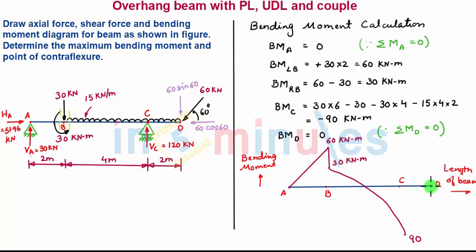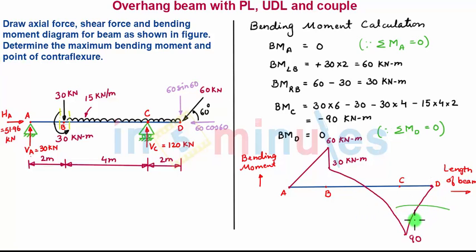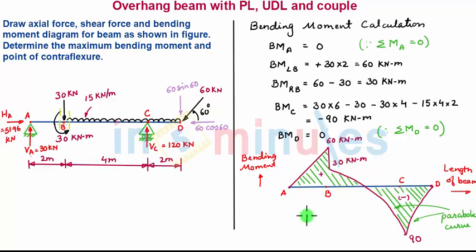Bending moment at D is again 0. Between C and D there is also a uniformly distributed load, so the bending moment will be varying parabolically — this is a parabolic curve. This part of the beam is on the positive side whereas this part is on the negative side. With this our bending moment diagram is complete.